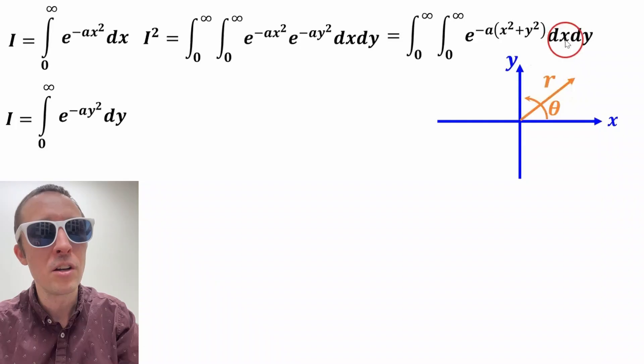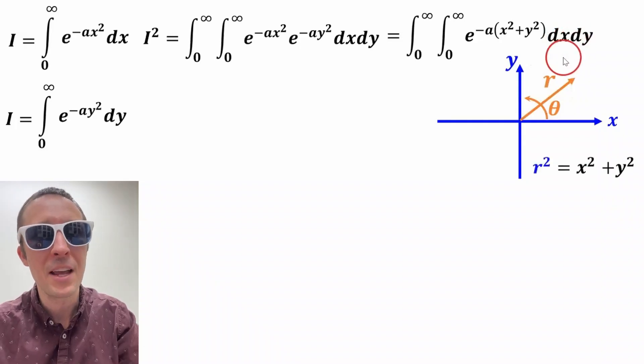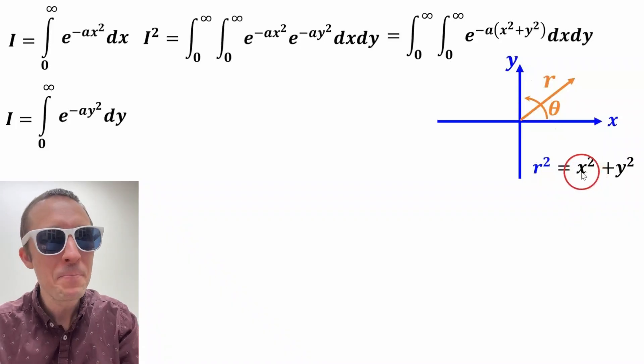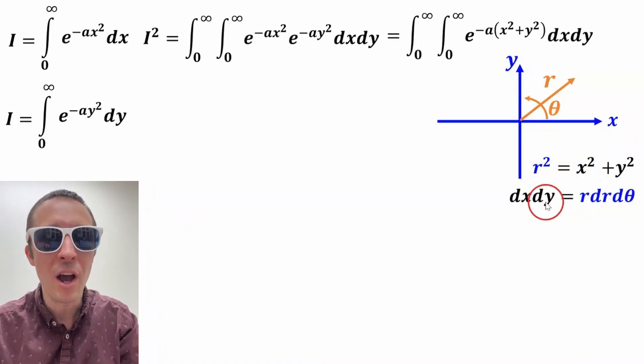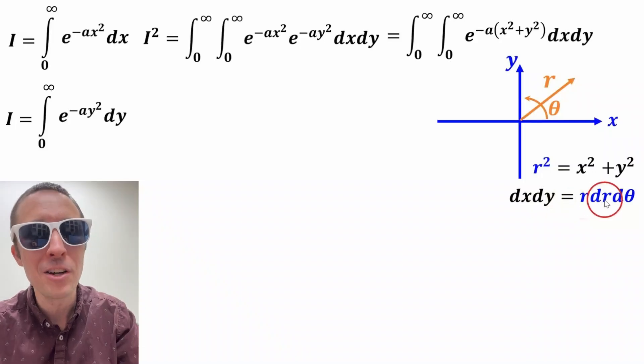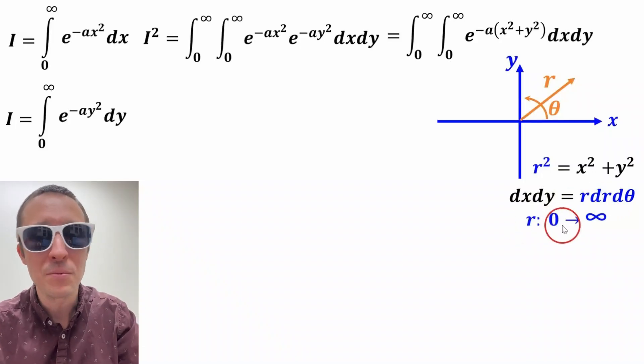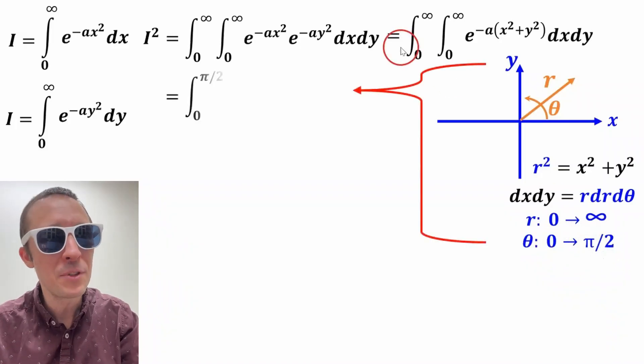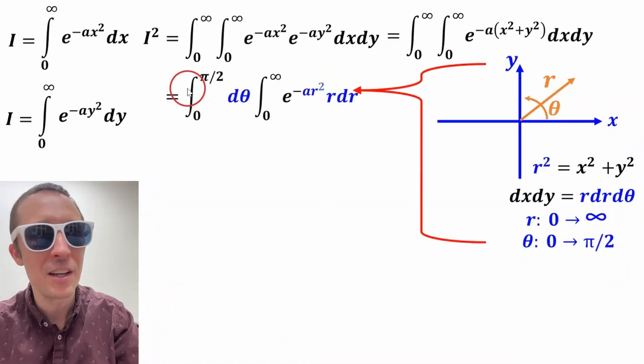To get r in terms of x and y, we use the Pythagorean theorem. r squared equals x squared plus y squared. And dx dy in terms of polar coordinates is r dr d theta. And then r goes from zero to infinity, and theta goes from zero to pi over two. And if we substitute that all in, this is what we got here.